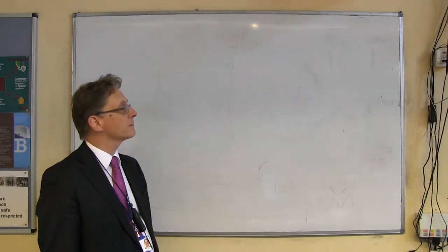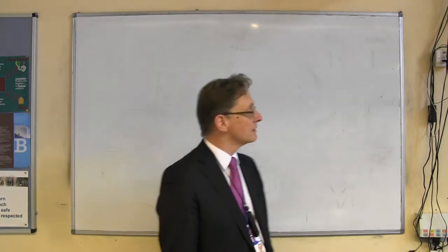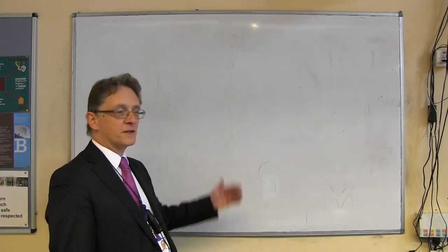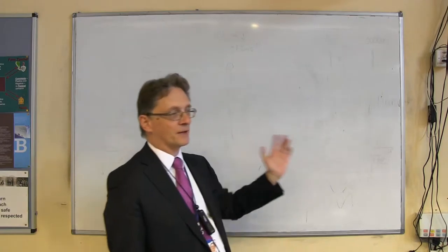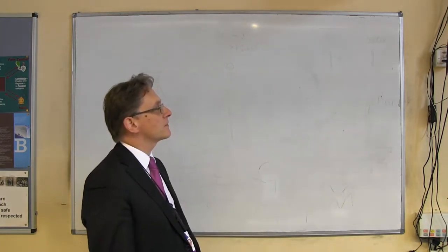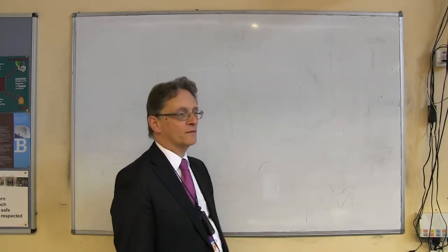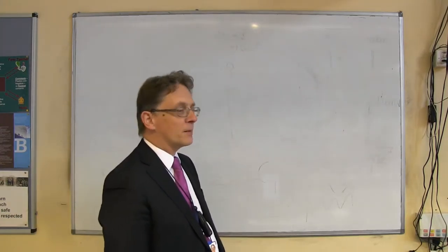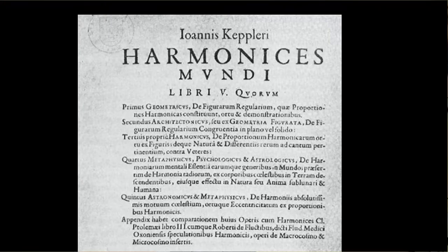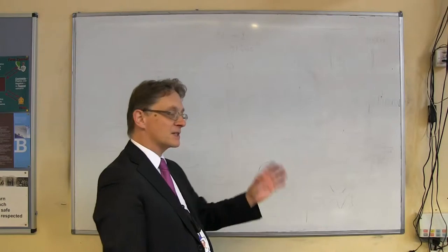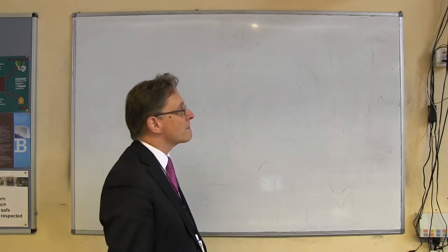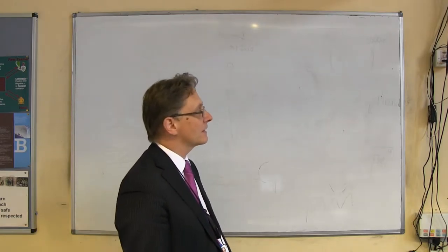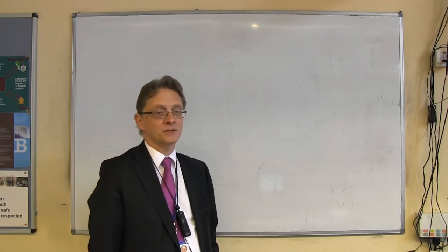Kepler's third law is the third of his laws of planetary motion. The first law is about the shape of the orbit; the second law is about how speed changes. Kepler, right at almost the end of his life, spent a long time looking for patterns. The third law is contained in his book called The Harmony of Worlds — he was convinced he was finding a secret pattern hidden in the positions of the planets, some sort of code.